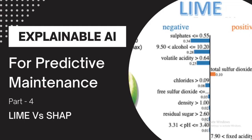Hello everyone and welcome back to my channel. In this playlist we are talking about various methods to explain the predictions of a machine learning or deep learning model, which is called Explainable AI. In this particular video we'll focus on a very popular algorithm called LIME - how it works and how it explains any kind of black box algorithm. We'll also compare LIME with the SHAP values method from the previous video.